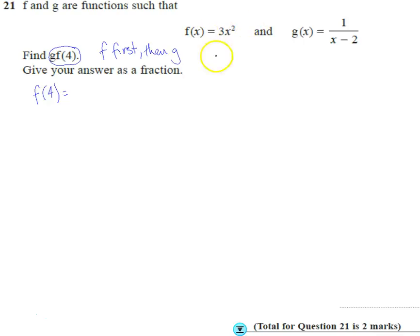Okay, so I'm going to substitute 4 into here. So that means 3 times 4 squared. Using BODMAS, I'm going to do the 4 squared first, which is 3 times 16, which is 48. And then this means whatever answer we get for the f bit, we're now going to put that answer